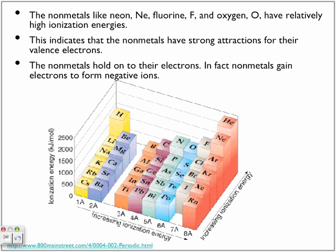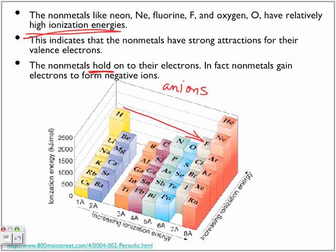Non-metals like neon, fluorine, and oxygen have high ionization energies — they are unlikely to get rid of their electrons because they have a strong attraction for their valence electrons. The atomic radius is getting smaller as we move across the period, so there is a stronger pull of the outermost electrons to the nucleus. Non-metals hold onto their electrons; in fact, non-metals gain electrons to form negative ions called anions, giving them higher ionization energies because those electrons have a tighter hold to their nucleus.